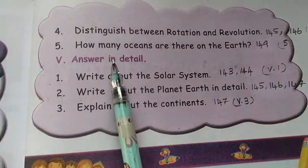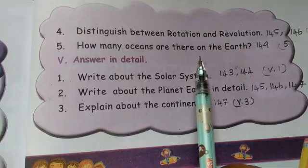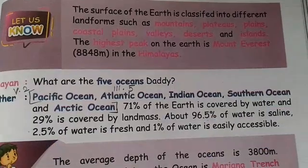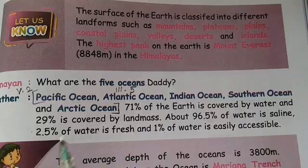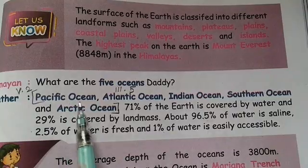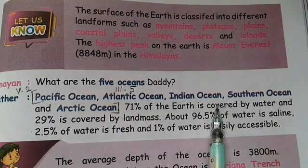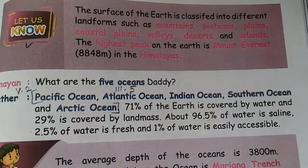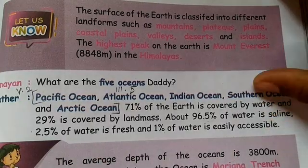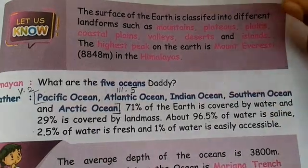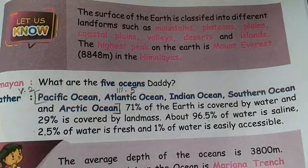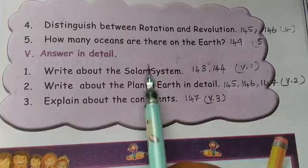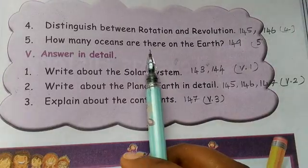Next question: how many oceans are there on the Earth? Page number 149. There are five oceans on the Earth: Pacific Ocean, Atlantic Ocean, Indian Ocean, Southern Ocean, and Arctic Ocean. Write one complete sentence stating there are five oceans on the Earth.